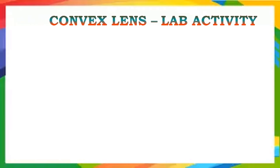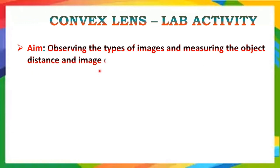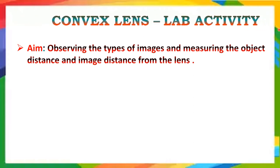The aim of this lab activity is: observing the types of images and measuring the object distance and image distance from the lens. We place a candle in front of the lens and obtain its image on the screen — where and how the image is formed, the type of image, whether it is real or virtual, and whether we can obtain it on the screen. We also measure the object and image distance in each case.